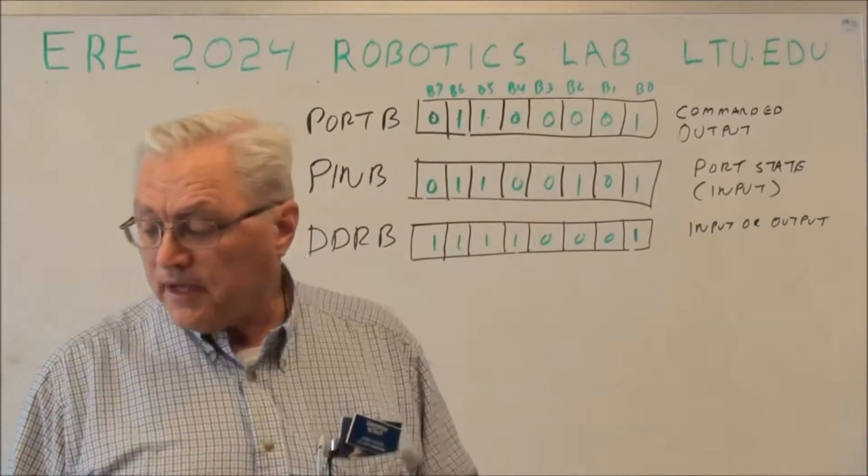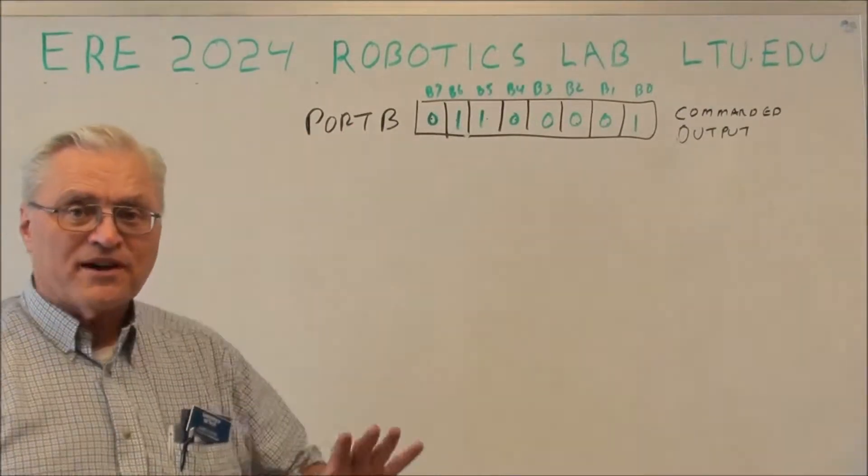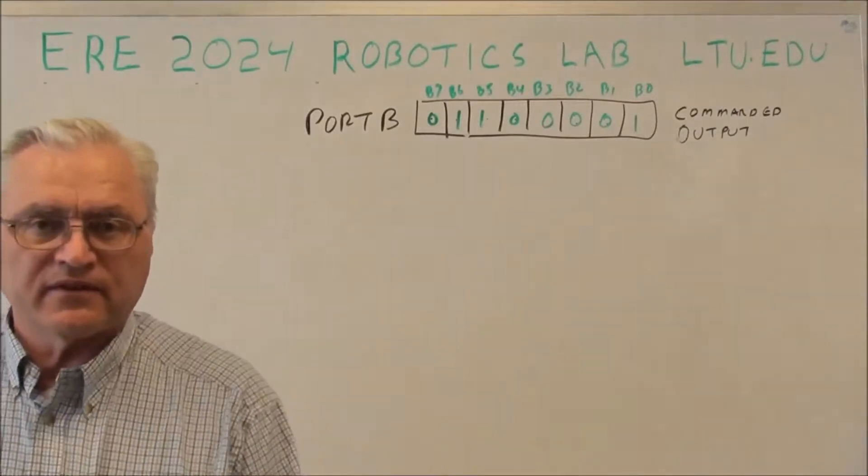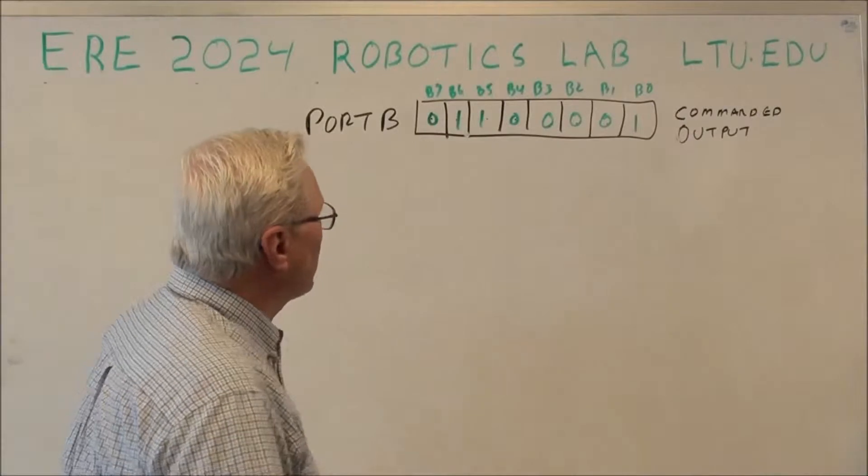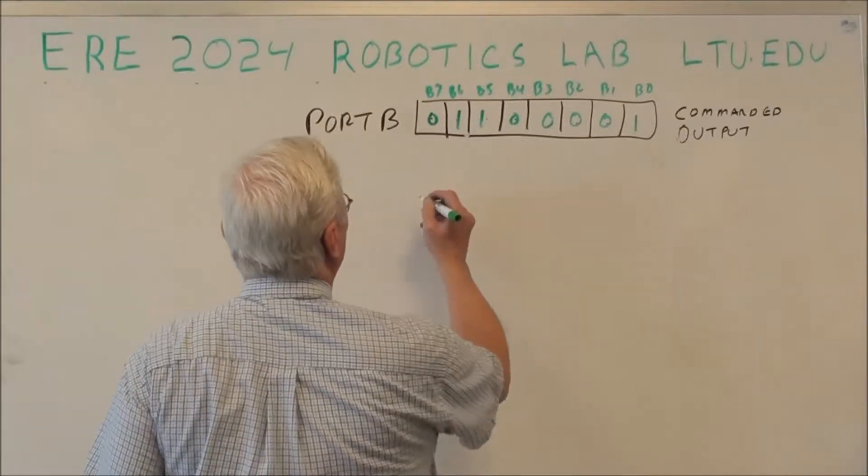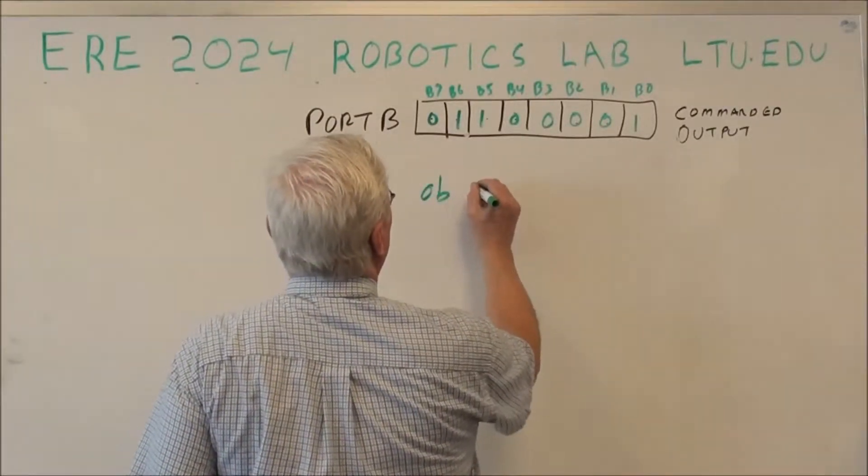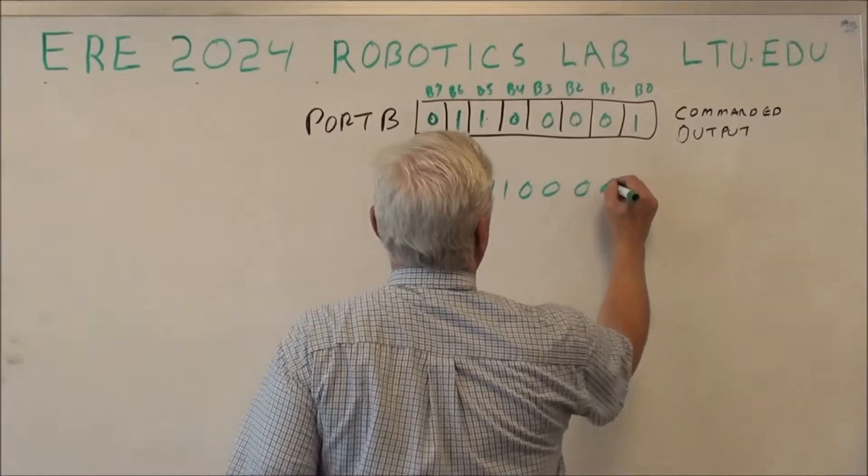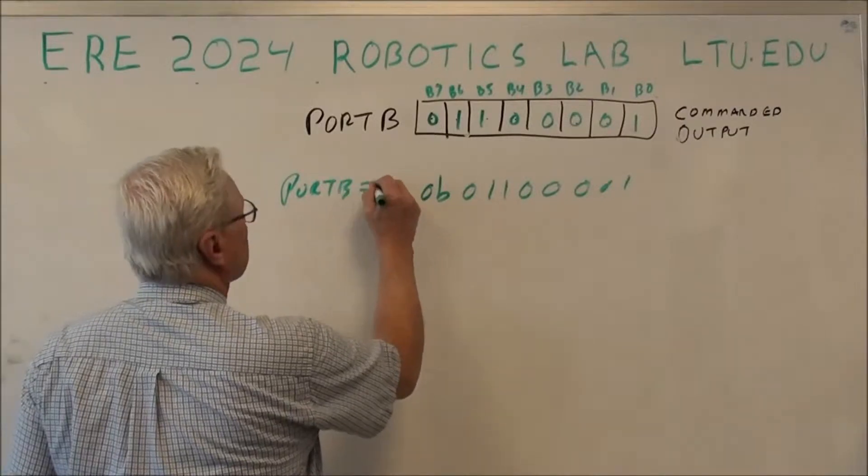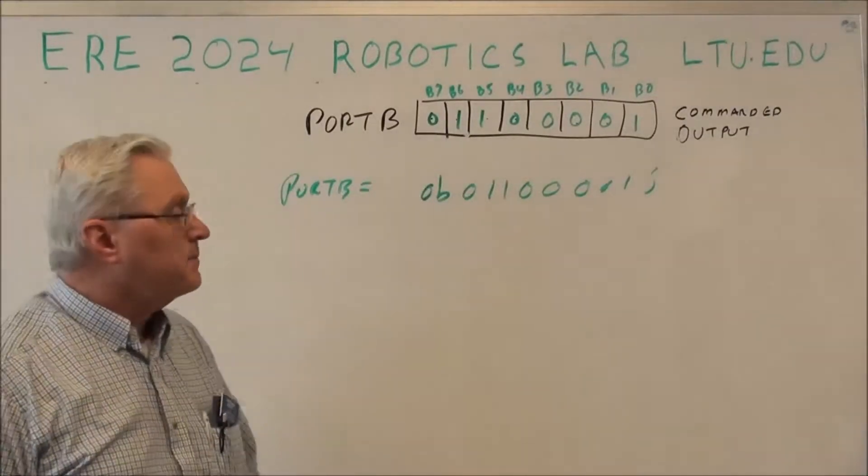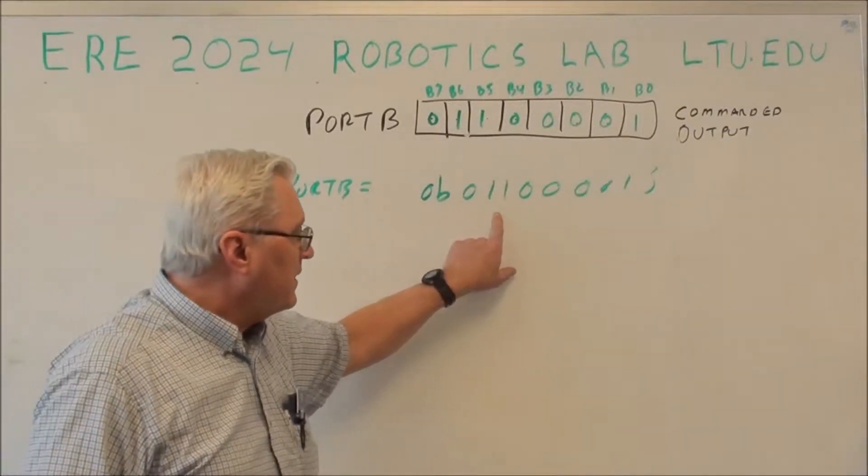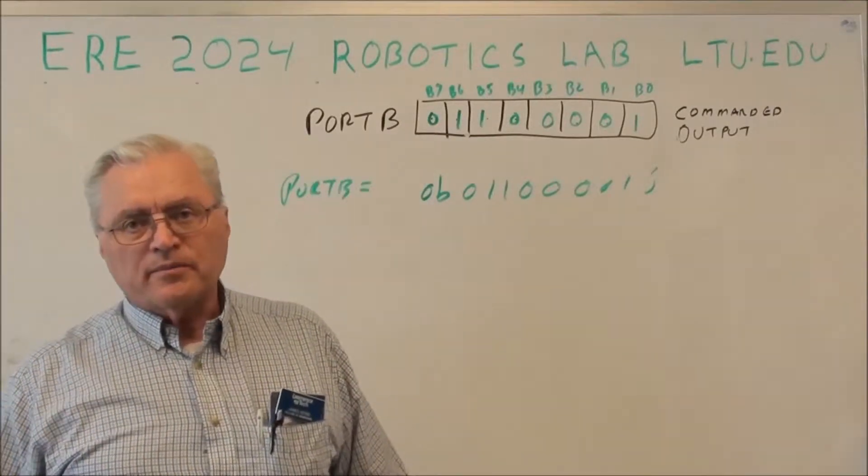So let's talk about how we make all this happen. If we just treat this as a general register for a moment, stepping away from the port. We can treat it as a port and what does that register contain? Well, obviously it contains the binary pattern 0B 01100001 is one way we could write that.